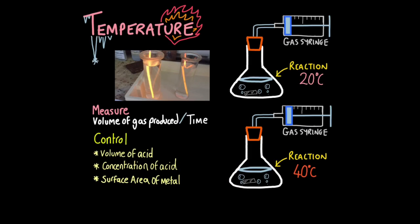Let's start with temperature. Here I've got two glow sticks. The light emitted from these glow sticks occurs due to a chemical reaction between the fluids inside the stick — when they react with each other they emit light. You'll notice one is significantly brighter than the other. Why? Well, this one is in hot water and this one is surrounded by cold water.